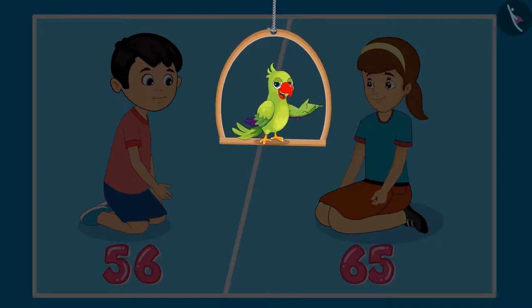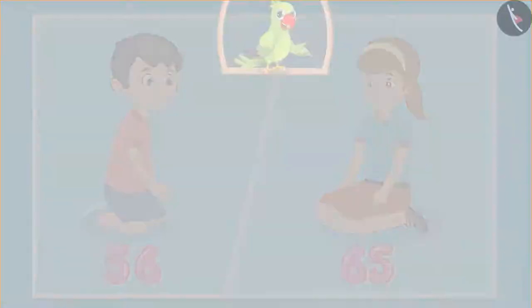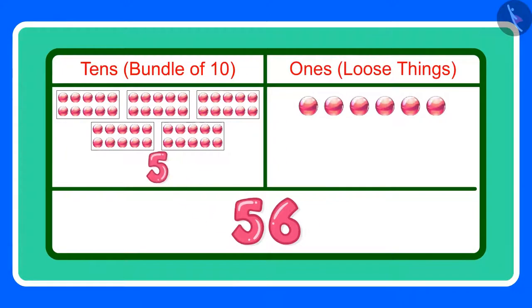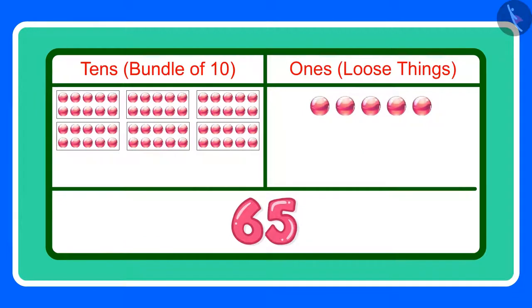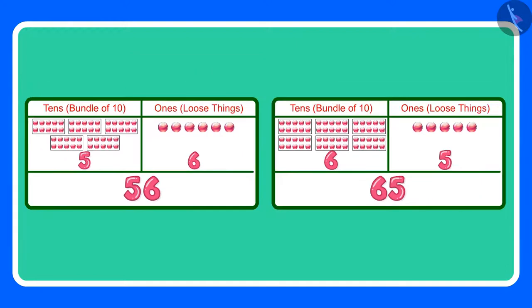Children, what do you think? Are 56 and 65 equal? Come, let us see. 56 means five tens and six ones, and 65 means six tens and five ones. The two numbers have different tens and ones. This means that 56 and 65 are not equal.